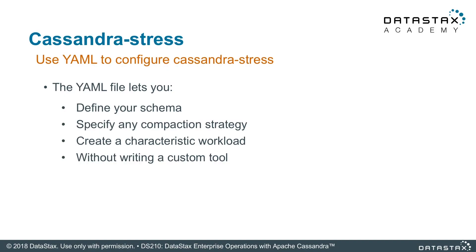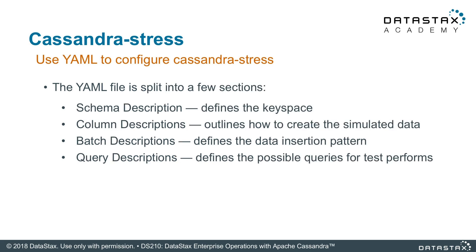Let's talk about the Cassandra Stress configuration. There's going to be a special YAML file — the Cassandra Stress YAML file — that you'll use to do this configuration. You can define your schema, specify a compaction strategy, or create a characteristic workload. This YAML file is broken up into a few pieces.